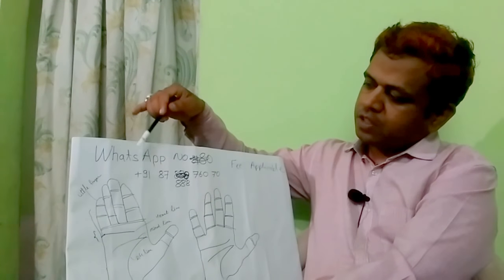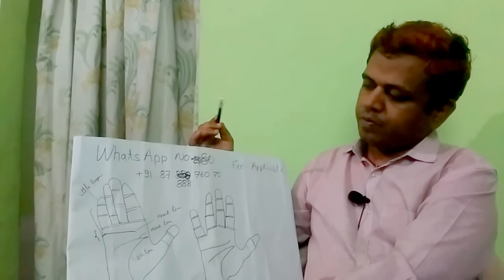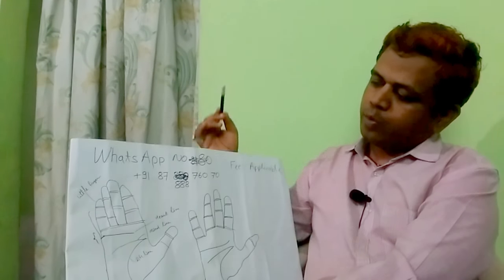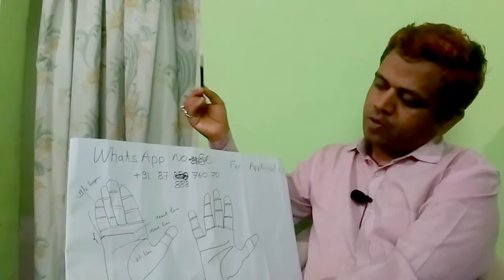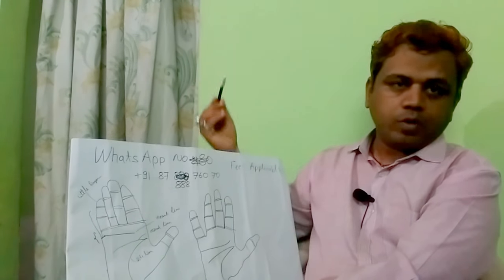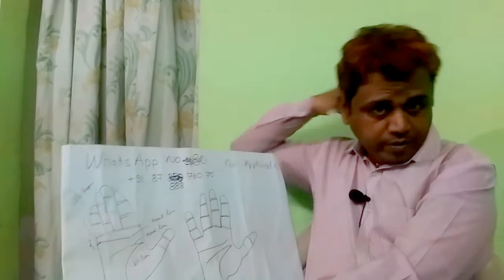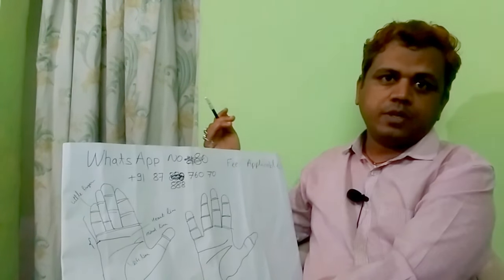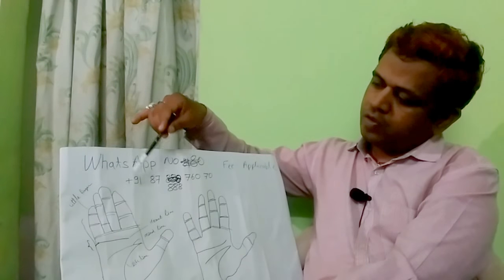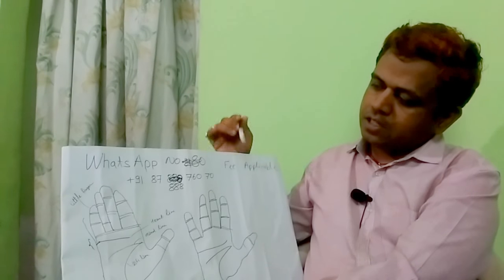First of all, this is our hand. If you want to know marriage time, for boys see the right hand, and see the left hand for girls. In Vedic Astrology there is some difference for marriage, but otherwise everything is the same. So I am considering the right hand.